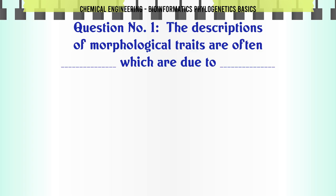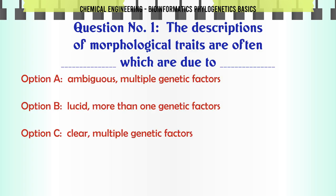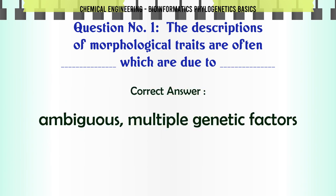The descriptions of morphological traits are often which are due to: a. Ambiguous multiple genetic factors. b. Lucid more than one genetic factors. c. Clear multiple genetic factors. d. Ambiguous one or two genetic factors. The correct answer is: Ambiguous multiple genetic factors.